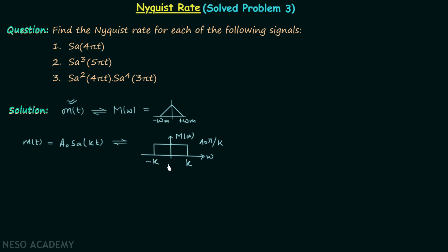Compare the two waveforms and you will find that k is equal to ωm. So the maximum frequency component of a sampling function is k. This k gives you the value of the maximum frequency component ωm, and once you have ωm you can calculate the Nyquist rate ωs, which is equal to twice ωm.